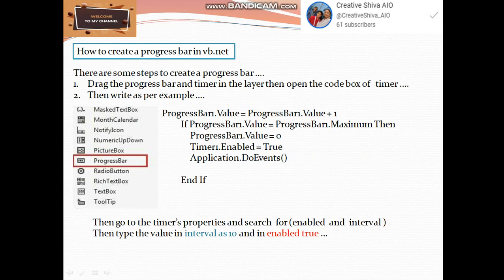If progress bar 1 dot value equals to progress bar 1 dot maximum Then Timer 1 dot enabled equals to true, Application dot do events. End If. Then go to the timer's properties and search for enabled and interval. Then type the value in interval as 10 and in enabled keep it as true.